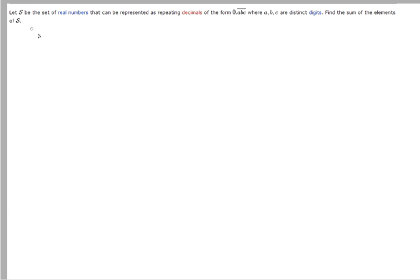Well, one thing to note is that the numbers of this form are exactly abc over 999. And the way to see that is to multiply this by 1,000 and subtract them. I'll show you.